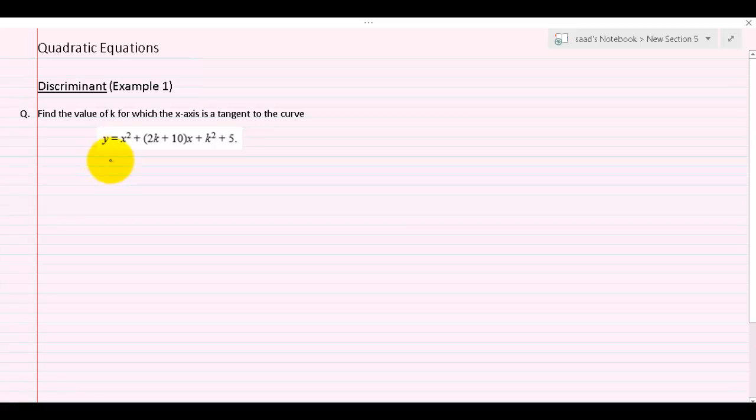Here we have a question which says find the value of k for which the x-axis is a tangent to the curve: y equals x squared plus (2k plus 10)x plus k squared plus 5. Since it uses the word tangent, that means our discriminant, which is b squared minus 4ac, will be equal to 0.